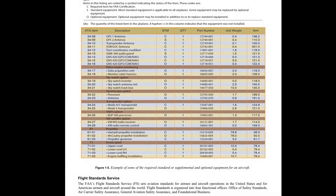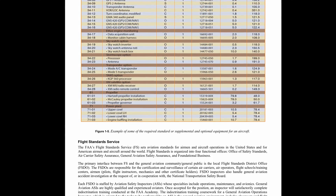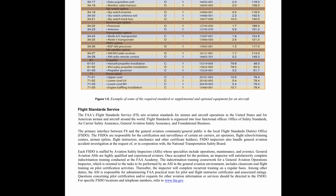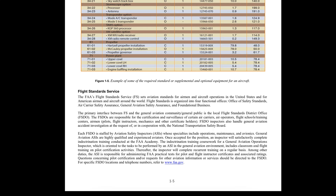Flight Standards Service. The FAA's Flight Standards Service (FS) sets aviation standards for airmen and aircraft operations in the United States and for American airmen and aircraft around the world. Flight Standards is organized into four functional offices: Office of Safety Standards, Air Carrier Safety Assurance, General Aviation Safety Assurance, and Foundational Business. The primary interface between FS and the General Aviation Community/General Public is the Local Flight Standards District Office (FSDO). The FSDOs are responsible for the certification and surveillance of certain air carriers, air operators, flight schools, training centers, airmen, pilots, flight instructors, mechanics, and other certificate holders. FSDO inspectors also handle general aviation accident investigation at the request of or in cooperation with the National Transportation Safety Board.